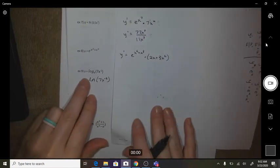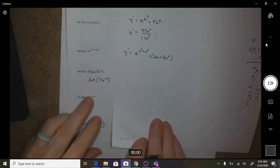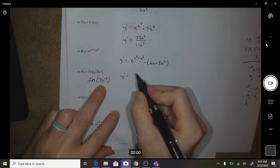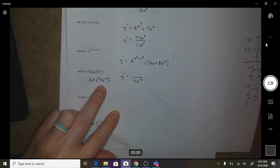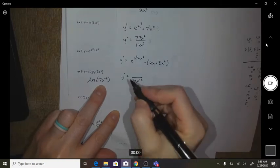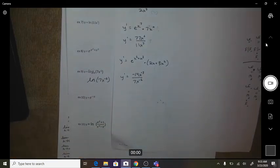Okay, number nine, if you ever see log e, that is the same as an ln. So here, we would have 7x to the negative 2 in the bottom, negative 14x to the negative 3 would be the derivative.